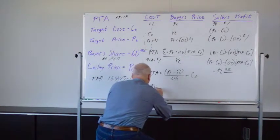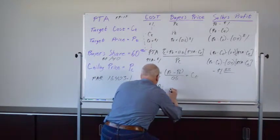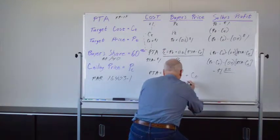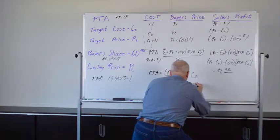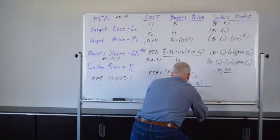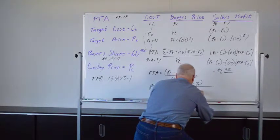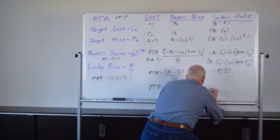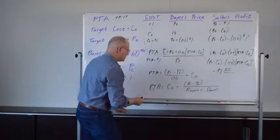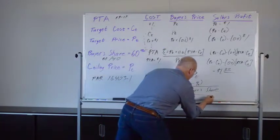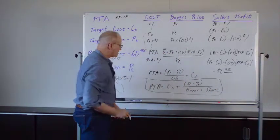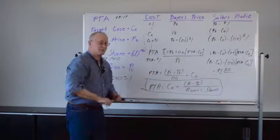And just putting this into more general terms, PTA equals the target cost plus the difference between the ceiling price minus the target price divided by the buyer's share. So this equation here, that's the equation you need to know for the exam.